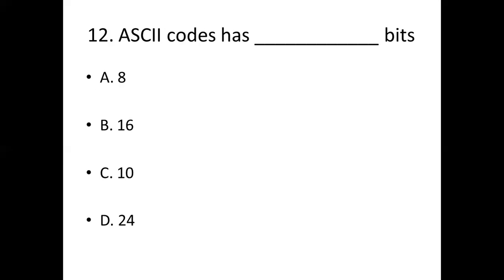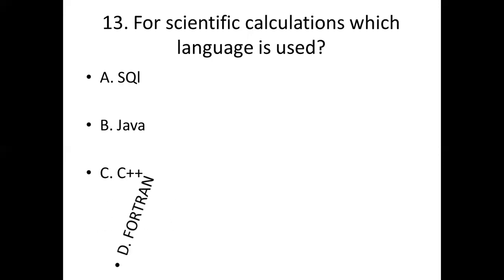Thirteenth bit: For scientific calculations, which language is used? Option A: SQL. Option B: Java. Option C: C++. Option D: Fortran. Answer: Option D — Fortran.